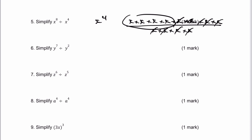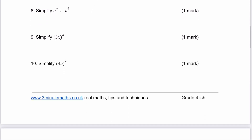So all we do is subtract the indices. This one is going to be y to the 5. This one is going to be z to the 1 — we don't normally write z to the 1, we just write z on its own. The next one is a to the 4 divided by a to the 4, which is exactly the same as a to the 4 over a to the 4, which equals 1, because we can divide top and bottom by a to the 4.